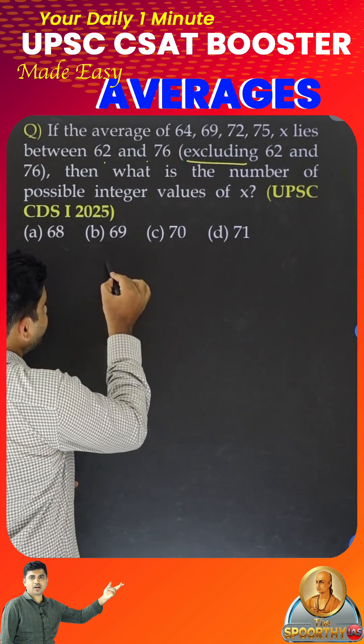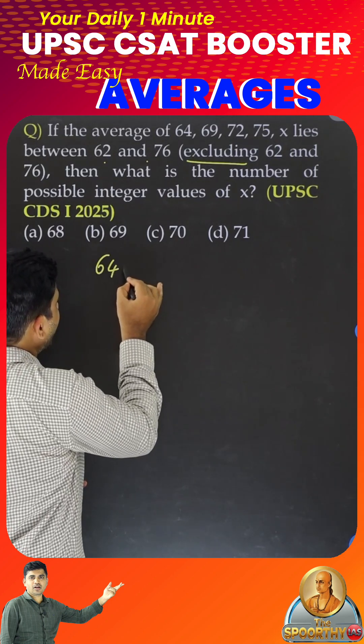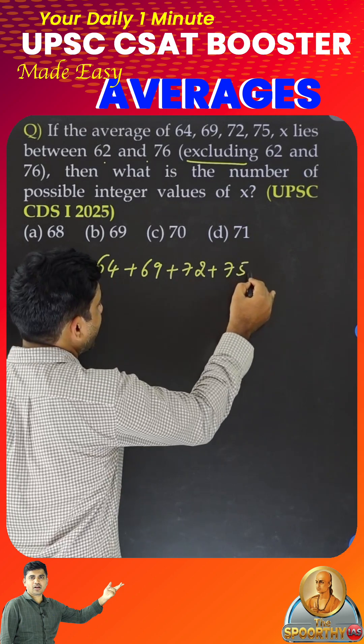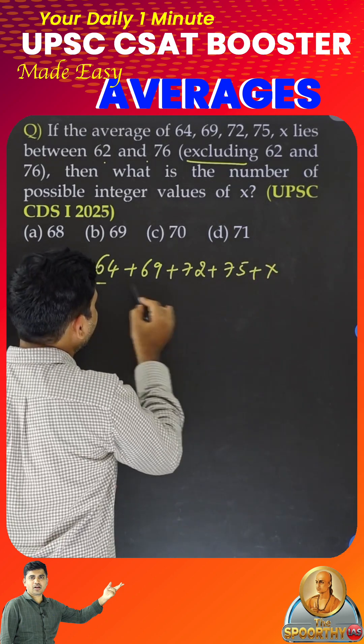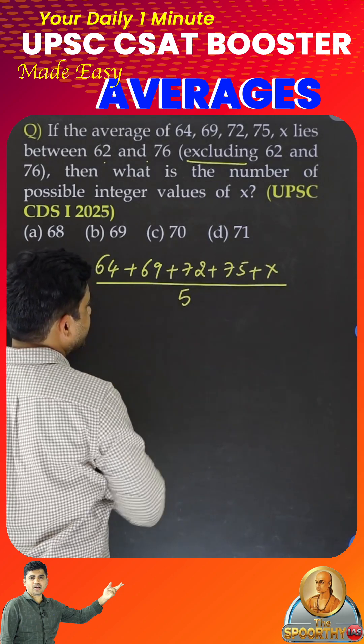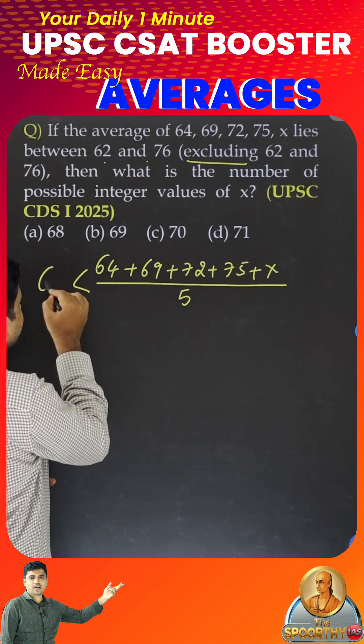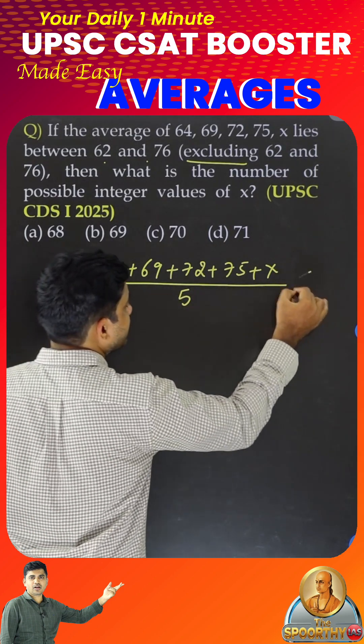Look at this. Write down the fundamental equation to find the average: sum of the numbers divided by number of numbers. Now, this value, this is average. It is in between 62 and 76.